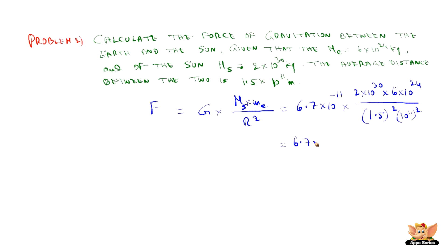On calculating this we get 6.7×6×2÷1.5², taking all the powers of 10 to one side: +30+24-11-22. This gives us 35.589×10²¹ N. So this can be written as 3.56×10²² Newtons.